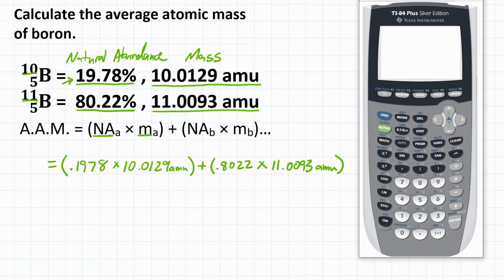Let's punch this in our calculator. You will do 0.1978 times 10.0129, plus 0.8022 times 11.0093. Hit equals, and we get 10.81221208.